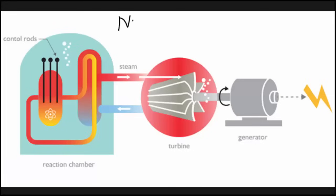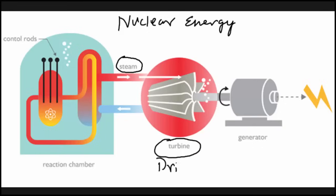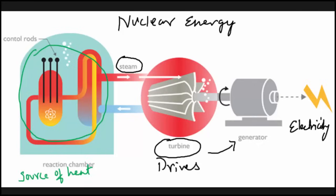And the last form of conventional energy is nuclear or atomic energy. In a nuclear-fueled power plant, water is turned into steam, which in turn drives turbine generators to produce electricity. The difference is the source of heat. In nuclear power plants, the heat to make the steam is created when uranium atom splits, which is also called fission. In nuclear fission, energy is released in the form of heat and this is used to generate electric power.